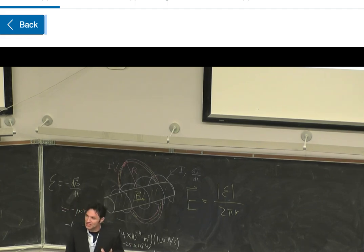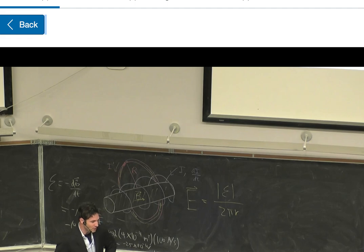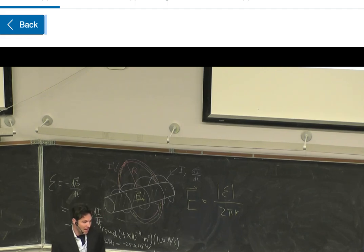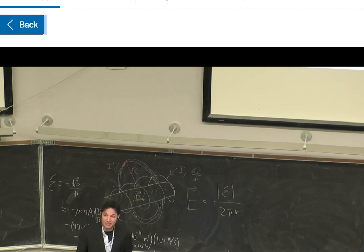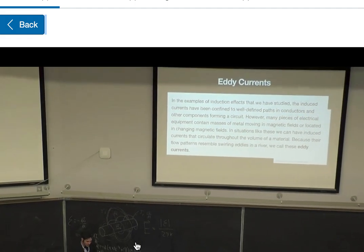Now we're going to talk about eddy currents — important for Thursday's demo. In the examples of induction we've studied, induced currents were confined to well-defined paths in conductors forming a circuit. However, many pieces of electrical equipment contain masses of metal moving in magnetic fields, where induced currents circulate throughout the volume of the material. Because their flow patterns resemble swirls, these are called eddy currents.